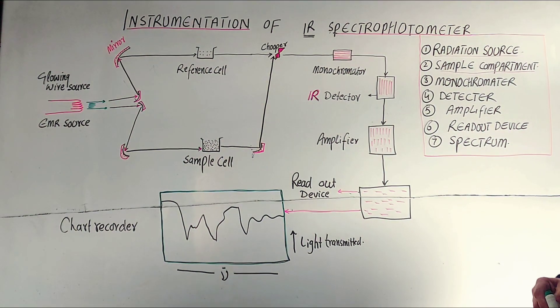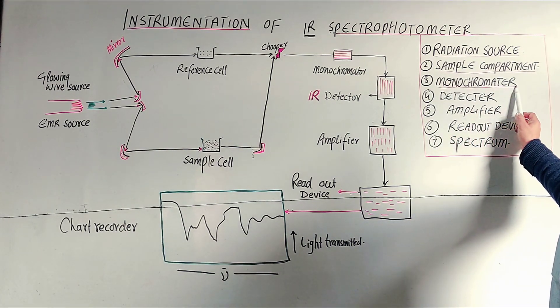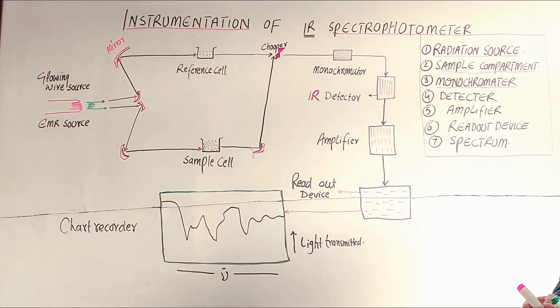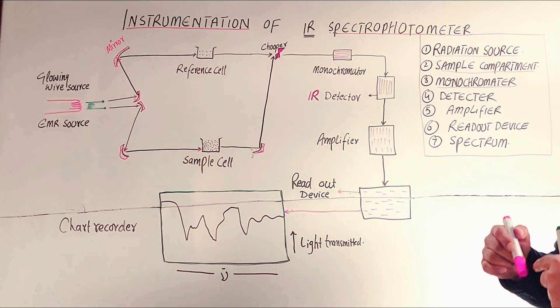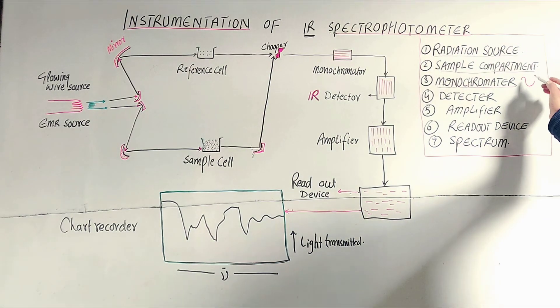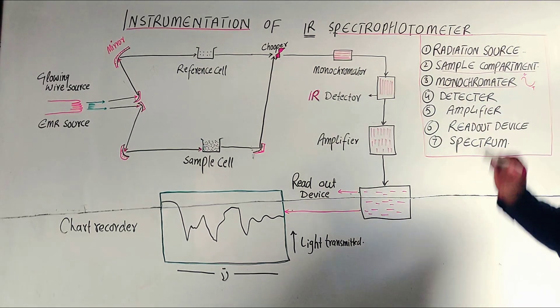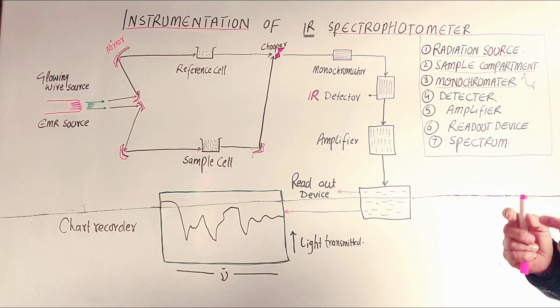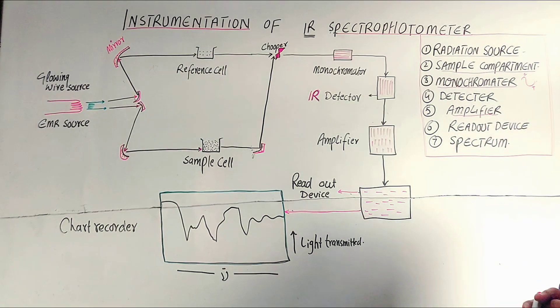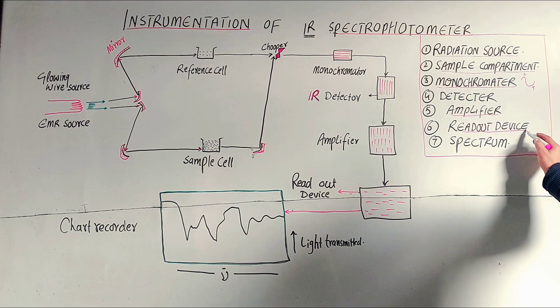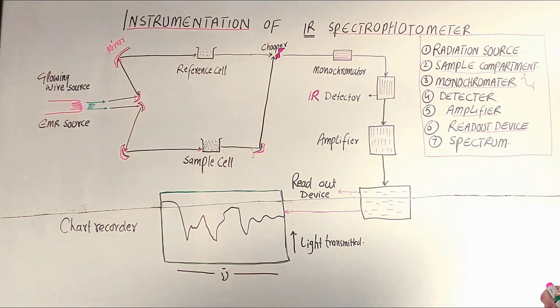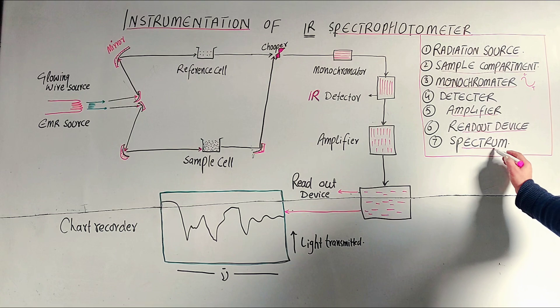IR radiations pass through the sample, then the monochromator. The monochromator converts IR radiation to single wavelength, monochromatic light. Radiations of single wavelength are called monochromatic. After that, a detector detects the IR radiation, then an amplifier magnifies it, and then the read-out device shows the spectrum - which IR radiations have been absorbed and which have not.